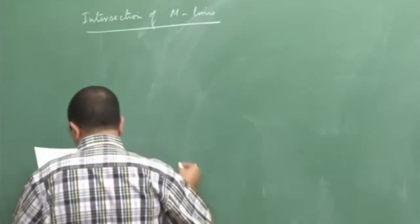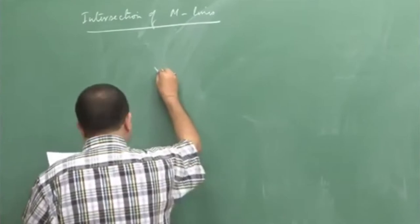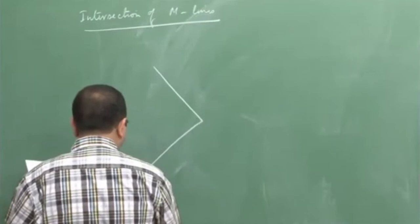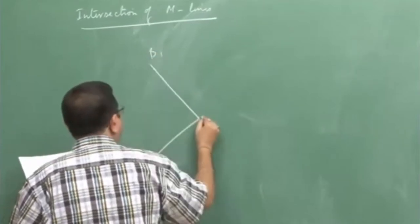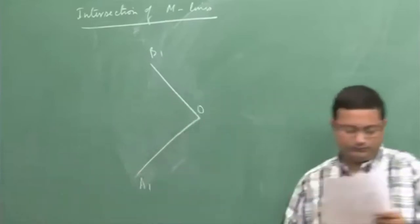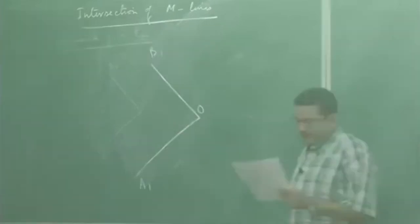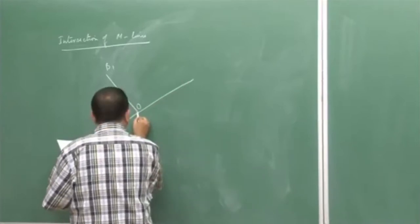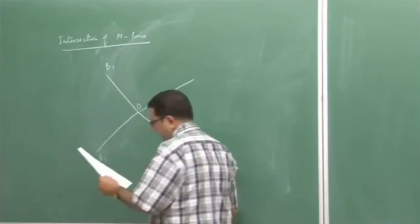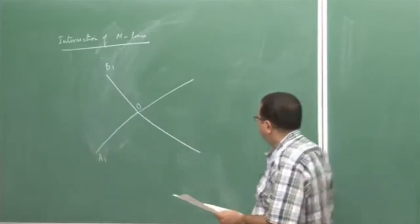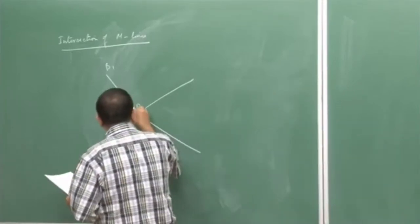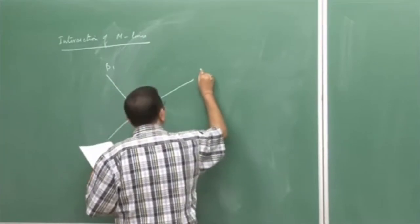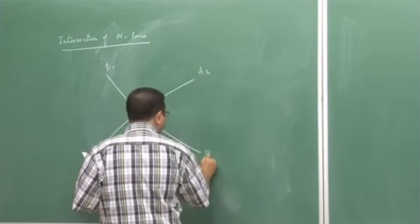Let us look at the intersection of Mach lines. Let me consider two Mach lines — one left-running, one right-running — and they are crossing at point O. After crossing, the Mach lines change; they deviate from their original path and go like this. So this is the incoming Mach line A1 and B1; after crossing, they become A2 and B2.